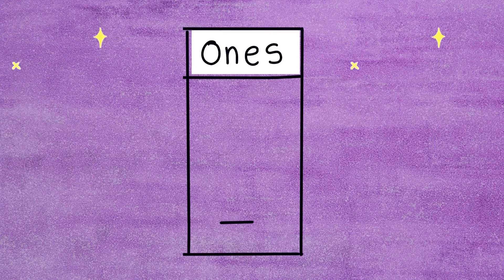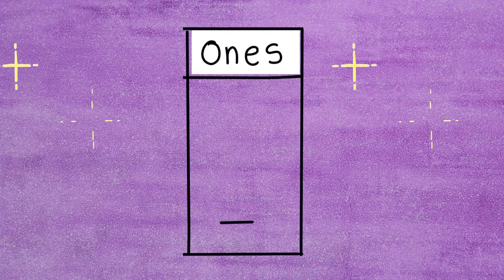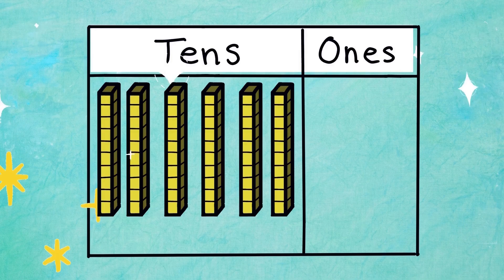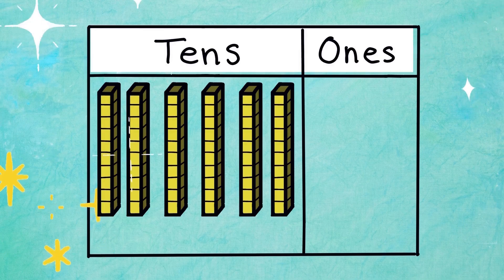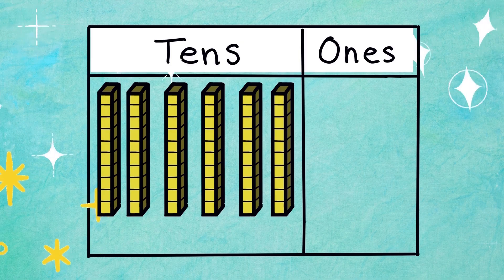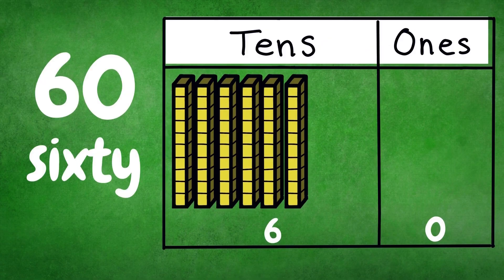Next number. It has no tenths and no ones. Can you guess what number? Do you know what it is? That's right — it's zero! Next number. It has two digits: six tenths and zero ones. It is 60! Good job.